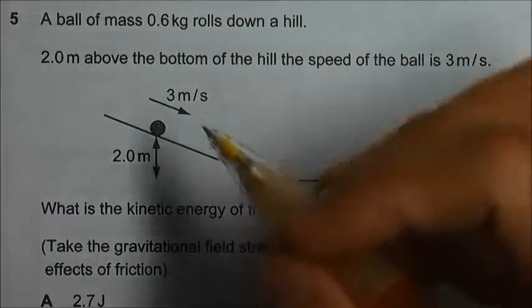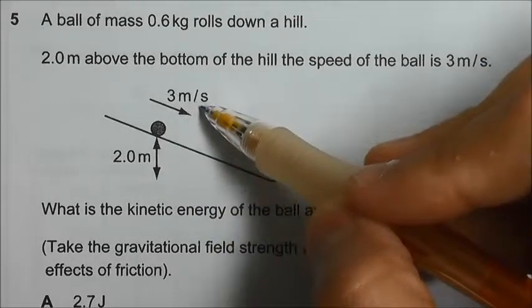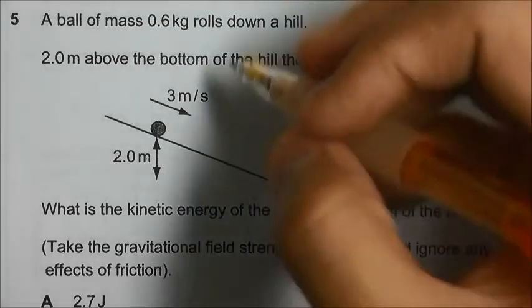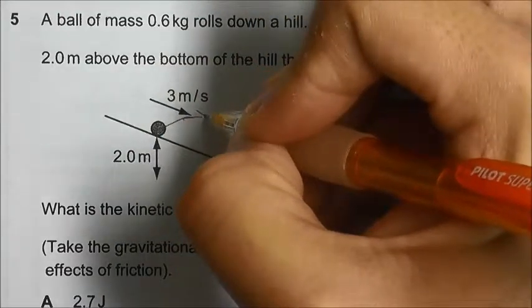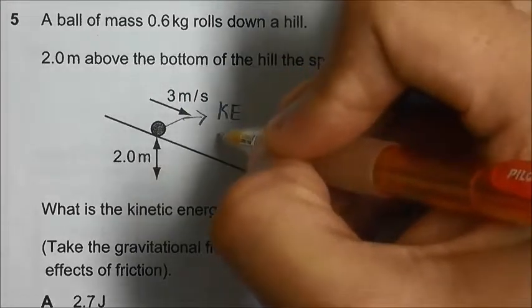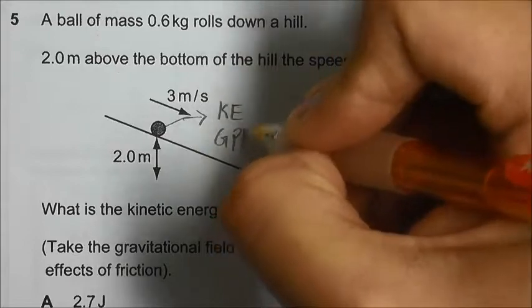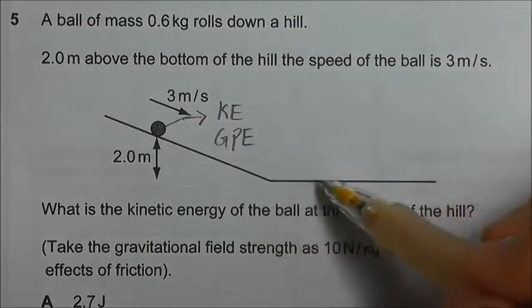We have a ball that is rolling down a slope of 2 meters with an initial speed of 3 meters per second. That means at this point, which is the initial location, the ball already has kinetic energy and gravitational potential energy. As it rolls all the way to the bottom of the hill,